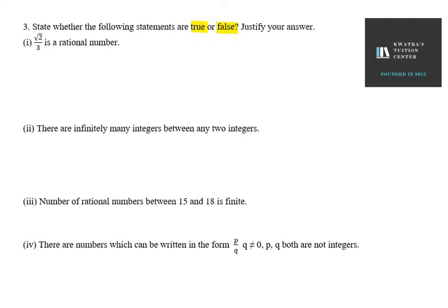The first part says: under root 2 over 3 is a rational number. We can clearly say that the statement is false. But why is the statement false? You can see that it is in the p-over-q form.